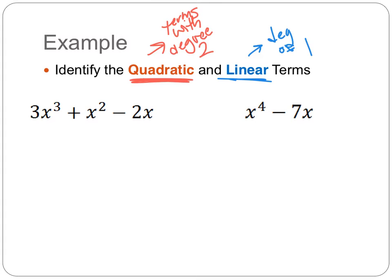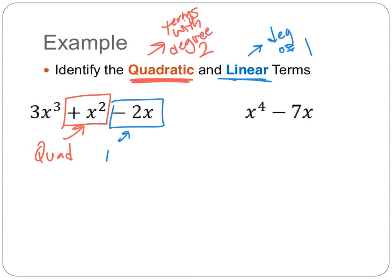The first example is 3x³ + x² − 2x. The x² term is our quadratic term because it has degree 2. The −2x term, since it has a degree of 1, is our linear term. We're simply looking at the degrees — whether it's x² or x — to identify quadratic or linear.